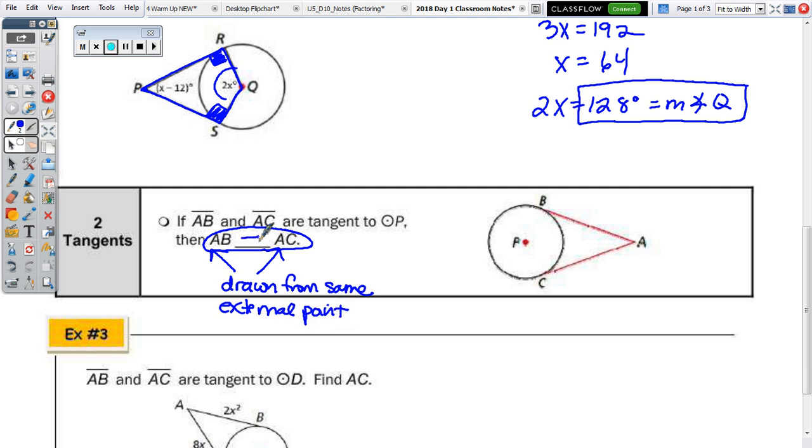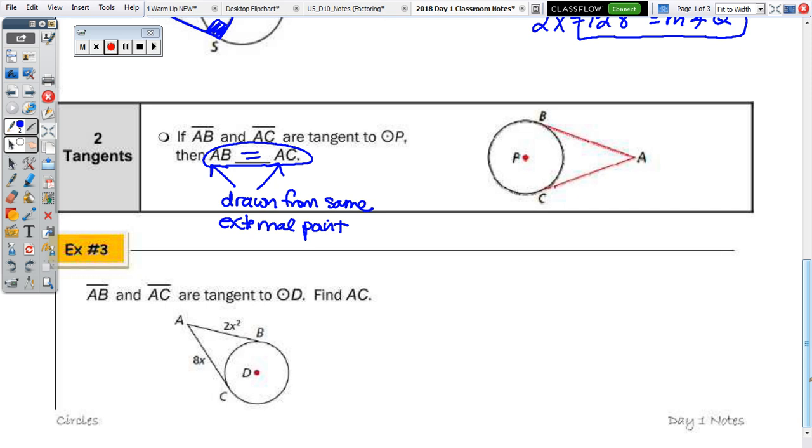But, this is just noting that the lengths of AB and AC, so AB and AC, since they're both drawn from the same external point, they are congruent. But, since it doesn't have the line segments over the top, that's talking about length, the lengths are equal.